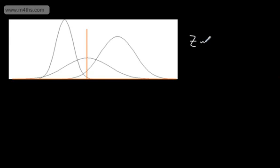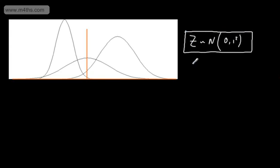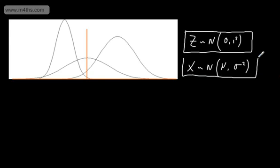The graph here shows the standard normal distribution, with a mean of 0 and a variance of 1. We've also got two other normal distributions. The standard normal is defined as z, where z follows a normal distribution with mean 0 and variance of 1. We can take a general normal distribution and state x, a random variable, follows a normal distribution with mean mu and variance sigma squared. Remember, the variance is the square of the standard deviation.